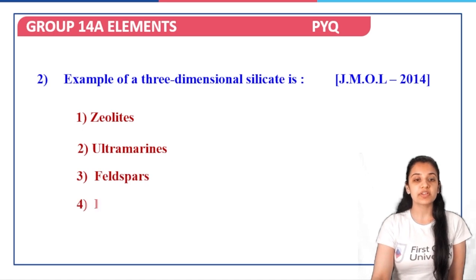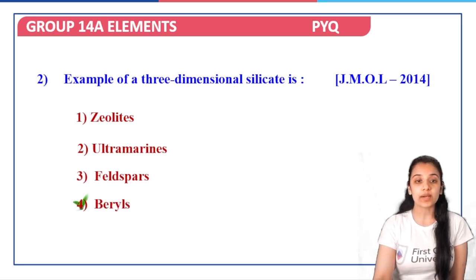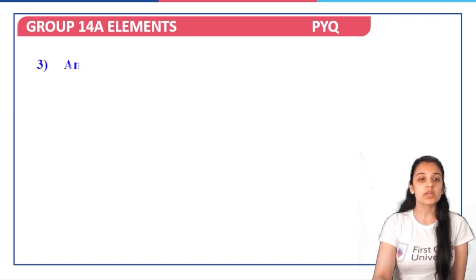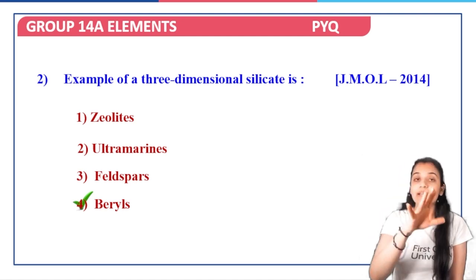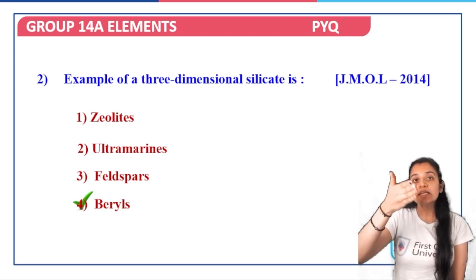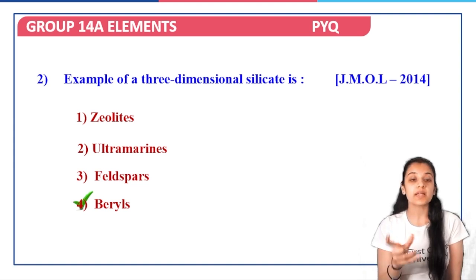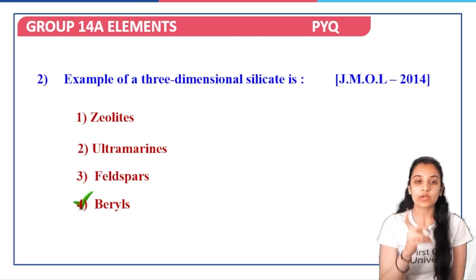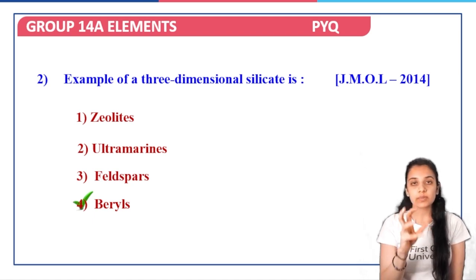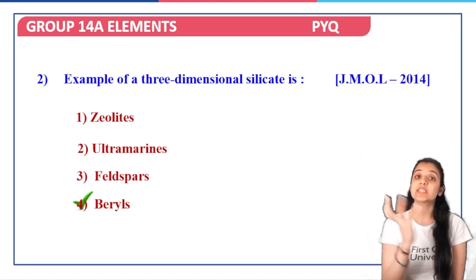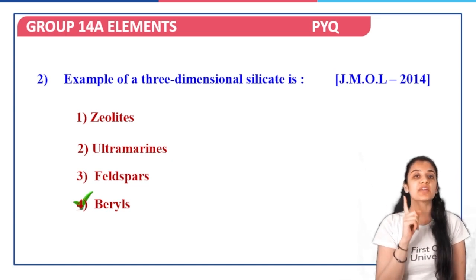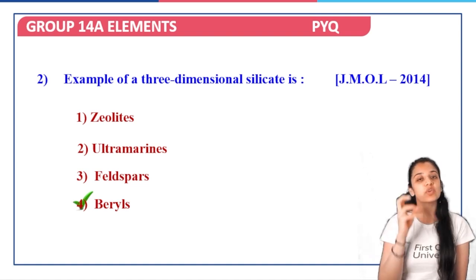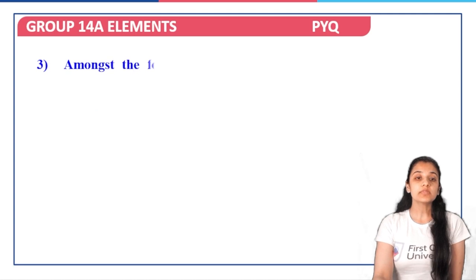Next: an example of a 3D silicate — zeolites, ultramarines, feldspar, or beryl. The answer is beryl. Zeolites are not a three-dimensional structure; they involve Si4+ being replaced by Al3+. I suggest searching for the three-dimensional structure of beryl on Google — once you see that structure you will not forget it in the examination. Beryl hasn't been directly discussed in the lectures but its structure is important.